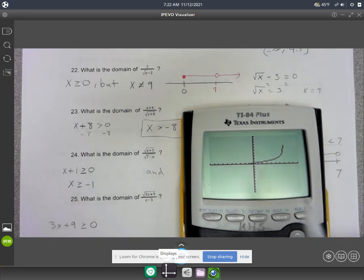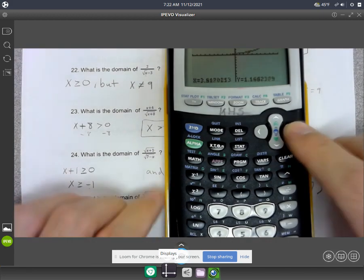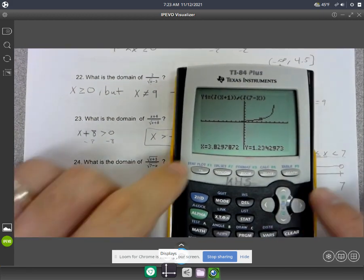So the domain is how far left and right the picture goes. And it's hard to tell here, but it's actually going from here to here. What you can do is you can press trace, and that allows you to be a little dot on the function. I'm just pressing over, and it's changing these x values.